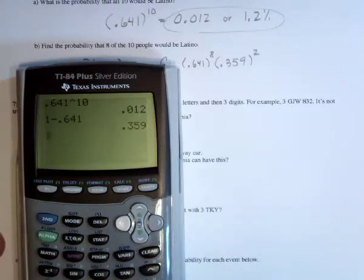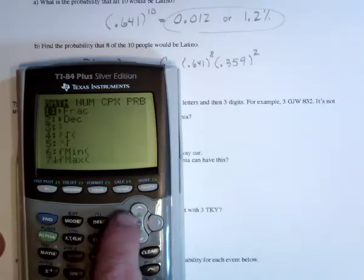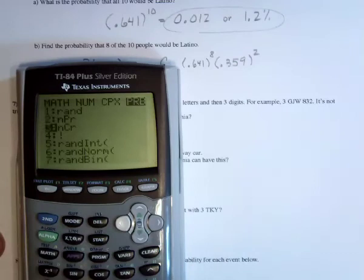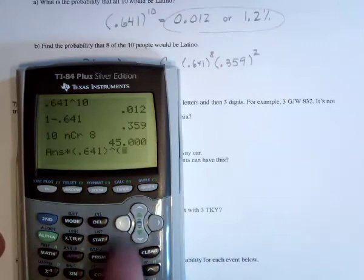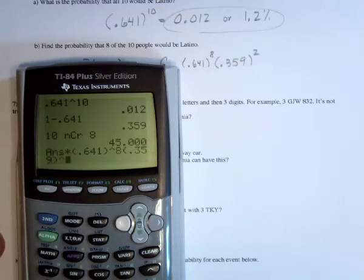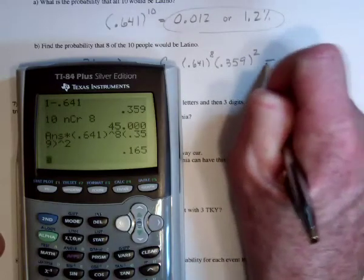So we need 10 combinations of 8 people being Latino, that's 45, and then multiply that with 0.641 raised to the 8th, and 0.359 raised to the 2. So it's a 16.5% chance.